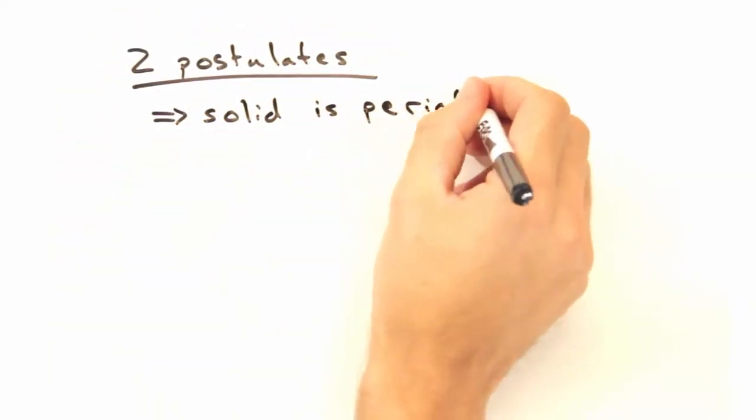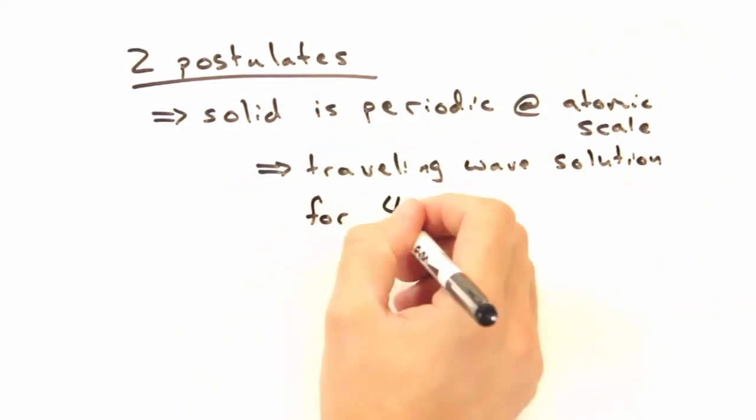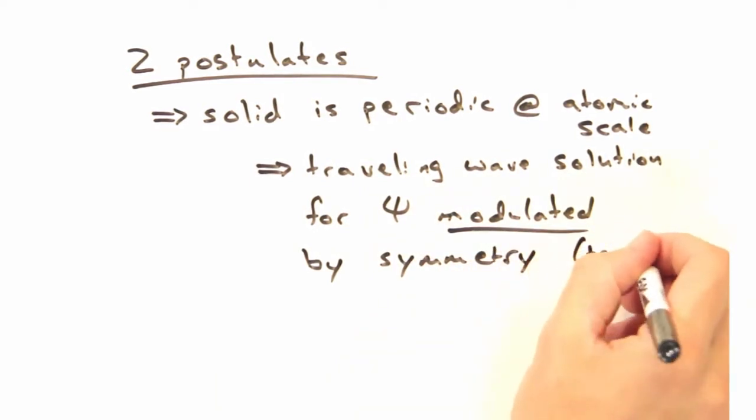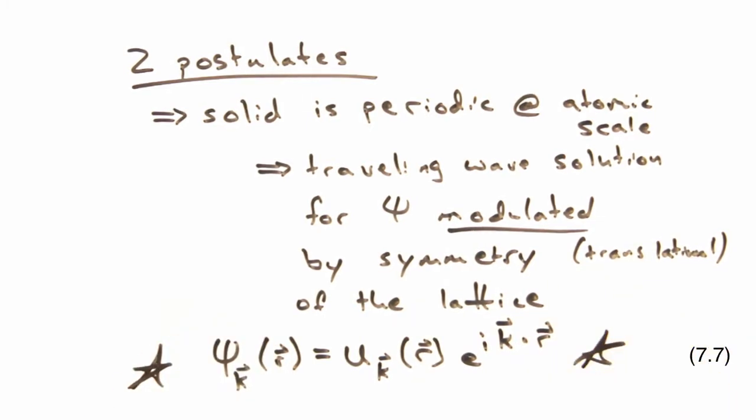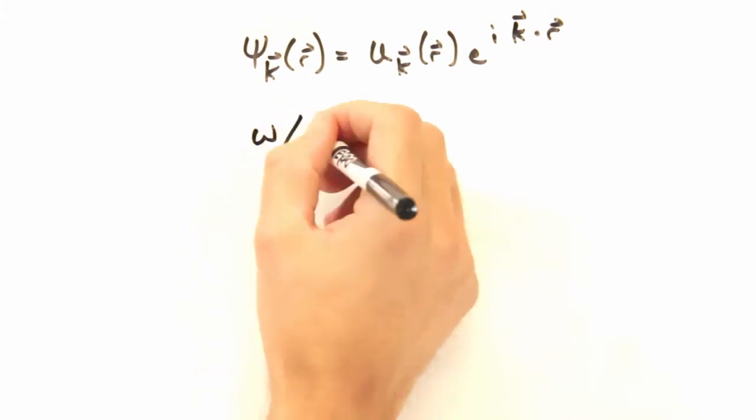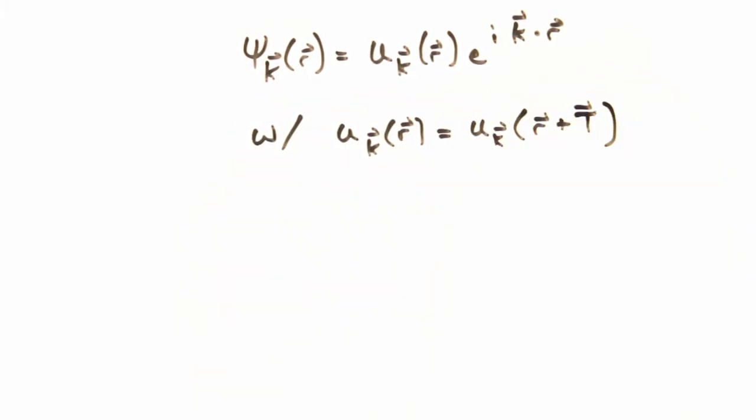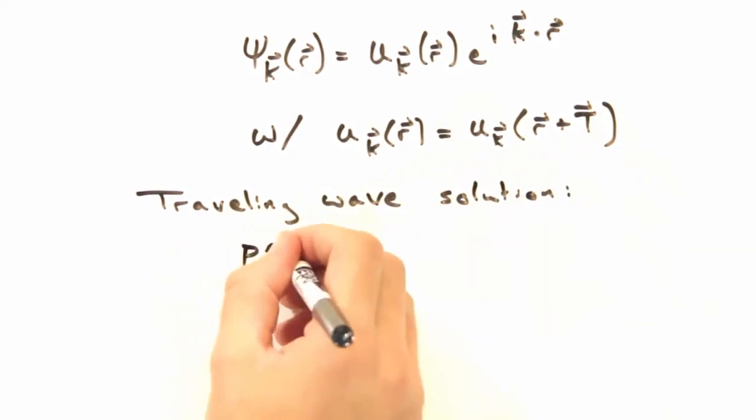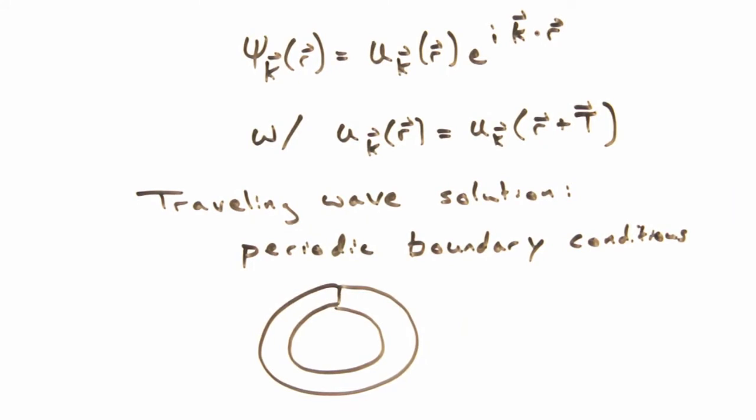The first states that because we have a solid that is periodic at the atomic scale, which is to say we have potential wells associated with each atom, we get a traveling wave solution for our wave function that gets modulated based on the symmetry of the lattice. And also, this traveling wave solution seems to suggest that we must have invoked periodic boundary conditions for the macroscopic solid.